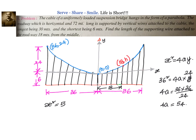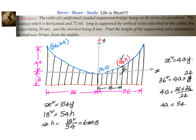Now that we have 4a = 54, the equation of the parabola is x² = 54y. Substituting x = 18: 18² = 54 × h, so h = 18² / 54 = 6 meters. But this is only the partial height from the parabola. We must add the 6-meter base, so the total length of the supporting wire is 6 + 6 = 12 meters.